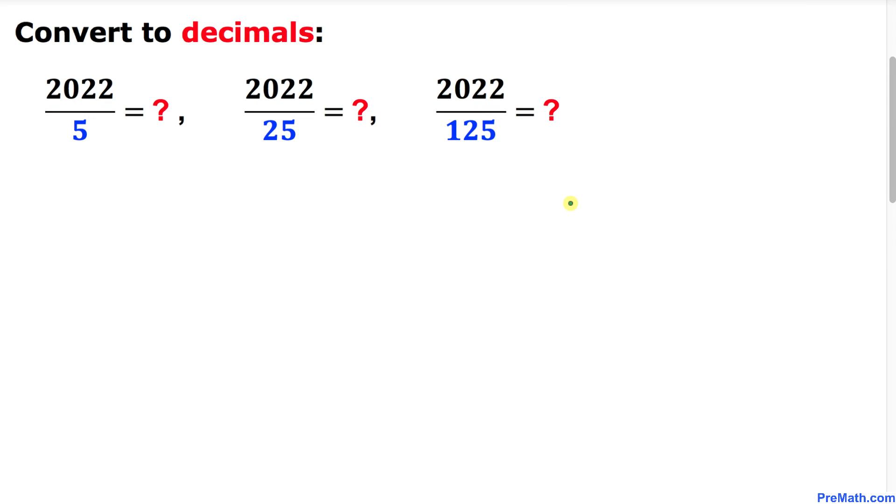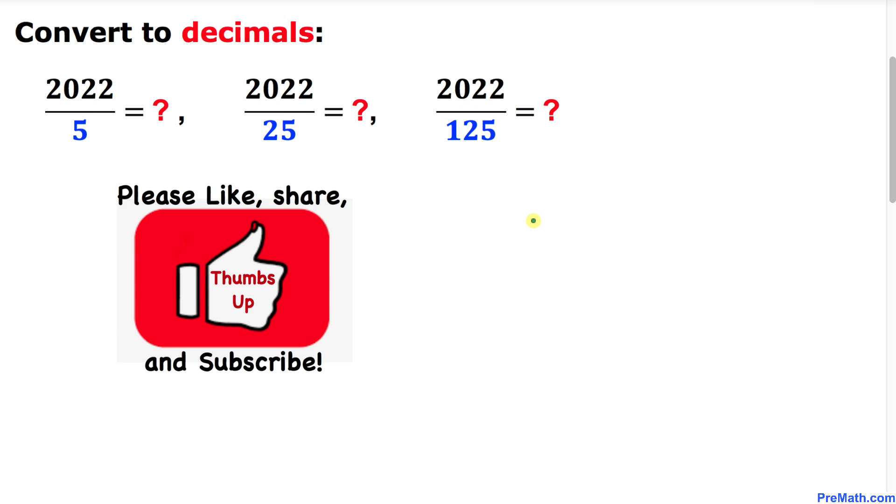Welcome to pre-math. In this video tutorial I'm going to show you how to convert these given fractions into decimals in just a matter of seconds. Keep in mind that the numbers at the denominators are 5, 25, and 125. Please don't forget to give a thumbs up to this video.